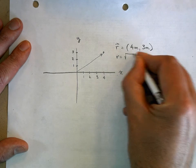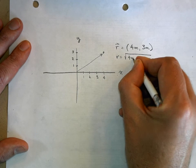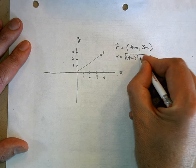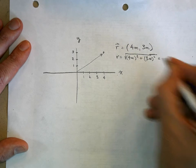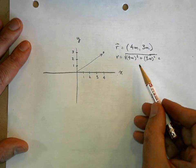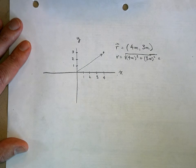r is equal to the square root of four meters squared. That is the x component squared plus the y component squared. And of course, all physics teachers and math teachers like to use three and four because what do you get? You get five, right?